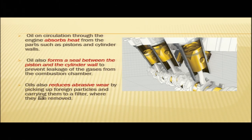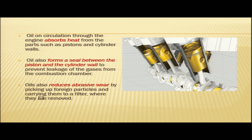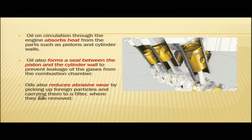Oil has various purposes: it reduces friction between moving parts, prevents rust and corrosion on metallic parts, absorbs heat from pistons and cylinder walls, forms a seal between the piston and cylinder wall to prevent leakage of gases from the combustion chamber, and reduces abrasive wear by picking up foreign particles and carrying them to a filter.